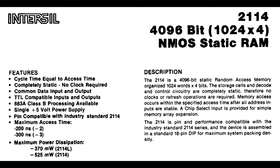There was originally a 2114 that consumed a certain amount of power. They eventually came up with a low power version which consumed a little bit less, but not a whole lot — certainly nothing like the CMOS chips of today. It was fast enough. How fast are these? 300 nanoseconds. We could do that calculation, but they were fast enough for what this computer needed.